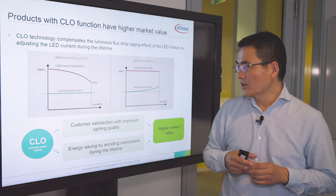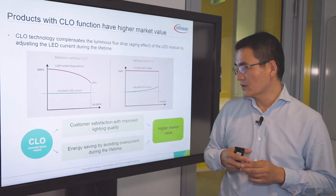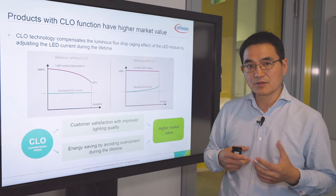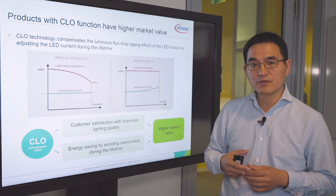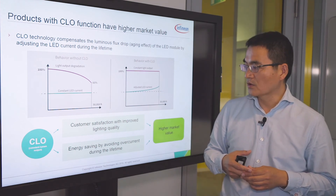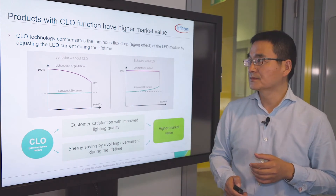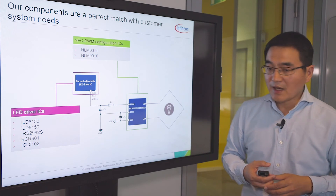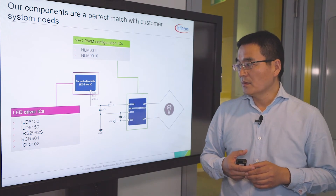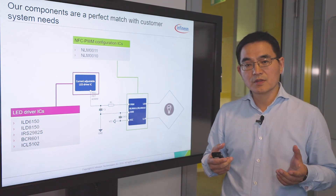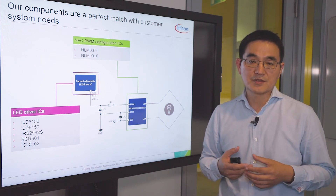In addition, with the CLO function, we can avoid excess current in an LED system, which saves energy during the lifetime. This function is available today for many high-end systems, and it is also possible with our solution to be implemented in middle or low-end systems. In the past, these two functions were implemented in high-end systems using a microcontroller, but the microcontroller solution is obviously too costly for cost-sensitive middle and low-end systems.